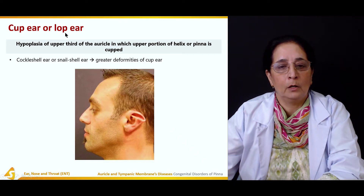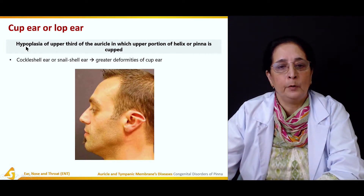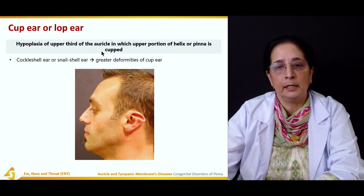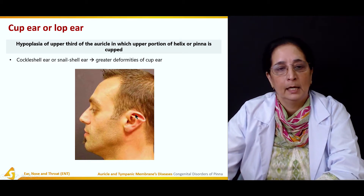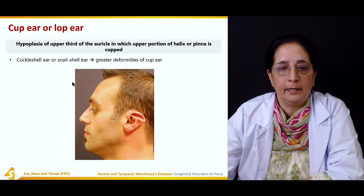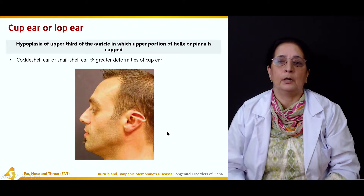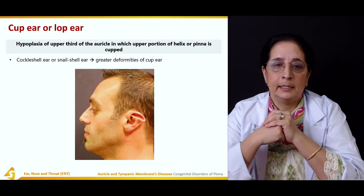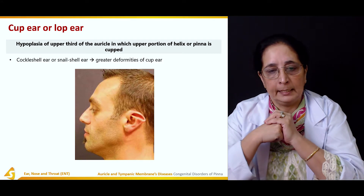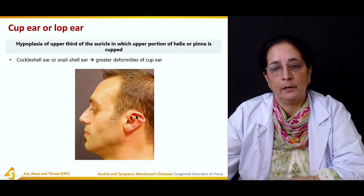The cup ear, or loop ear, results from hypoplasia of the upper third of the auricle, in which the upper portion of the helix or pinna is cupped — as clearly visible in the diagram. A greater deformity of the cup ear is known as a cockle shell ear or snail shell ear.